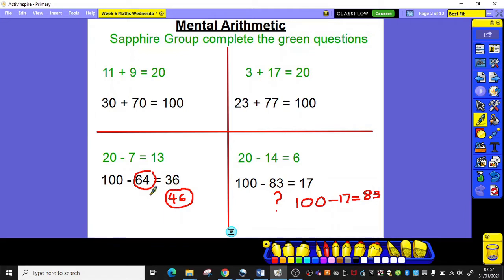The answer should be 36. So 100 subtract 60 is 40, take away 4 more is going to give you the answer 36. Once you've marked your answers, then we're ready to move on today please.